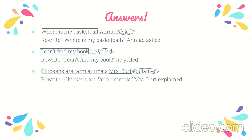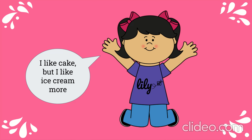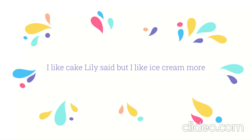Now let's go back to Lily. She says, 'I like cake, but I like ice cream more.' This is a longer sentence — notice the structure: 'I like cake, Lily said, but I like ice cream more.' The dialogue tag is sandwiched between two halves of the dialogue. Lily is still the speaker and 'said' is the action tag, but it appears between spoken words. Since 'said' is not at the end of the sentence, we put a comma after it. The dialogue is split in two, so we treat each part separately. 'I like cake' gets quotation marks from 'I' to 'cake,' with a comma after 'cake' since it's not the end of the sentence.